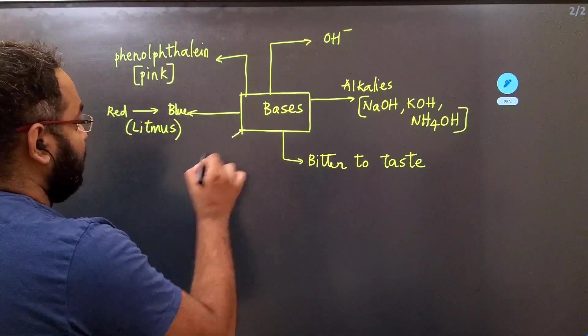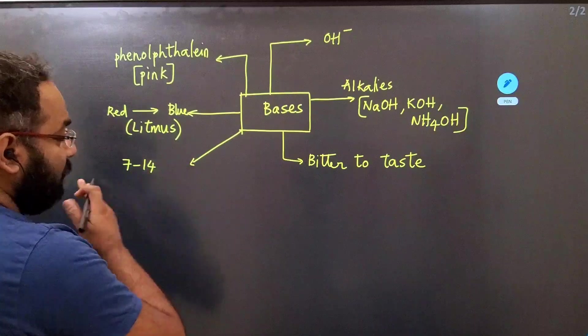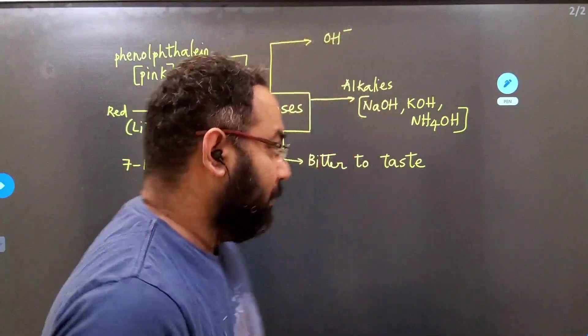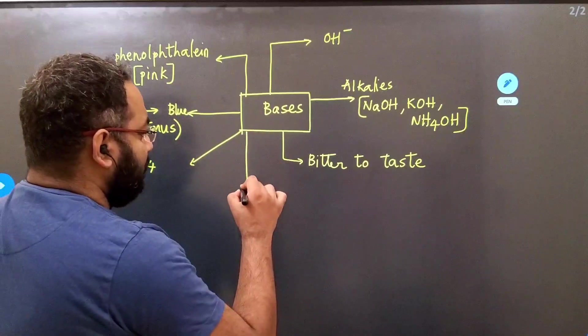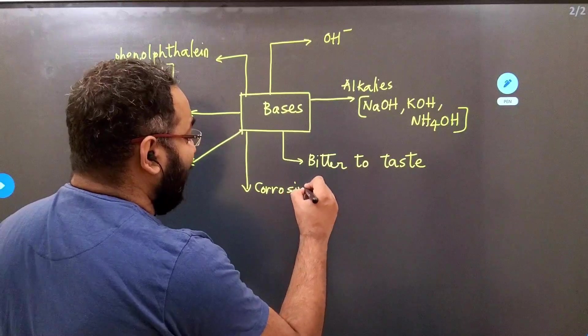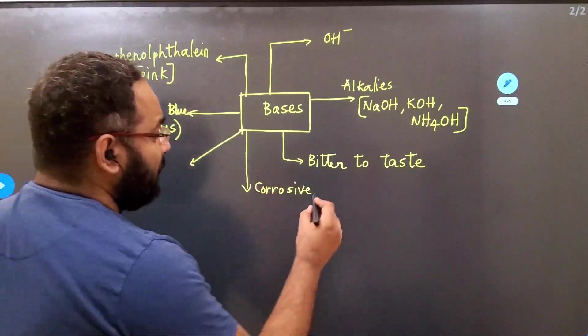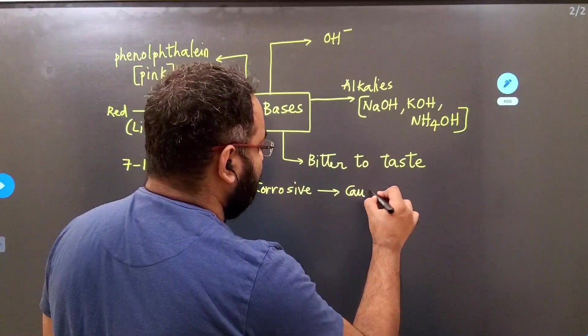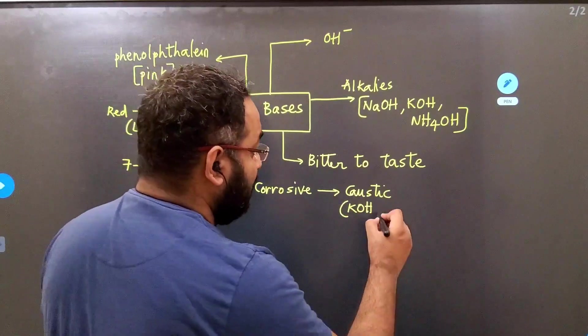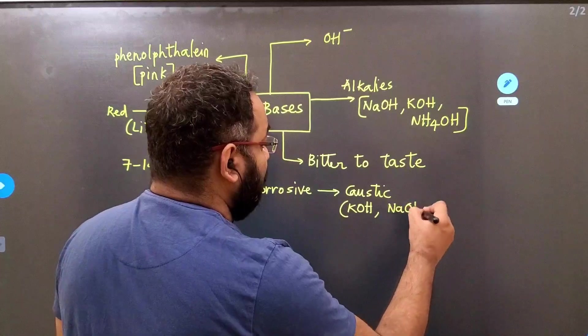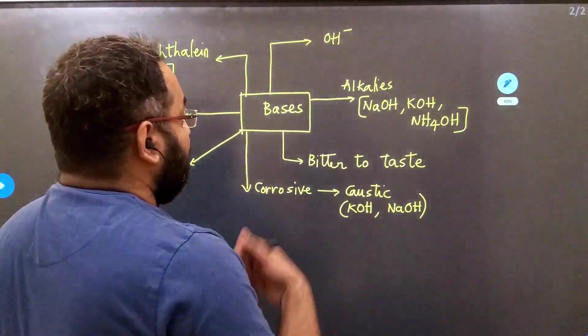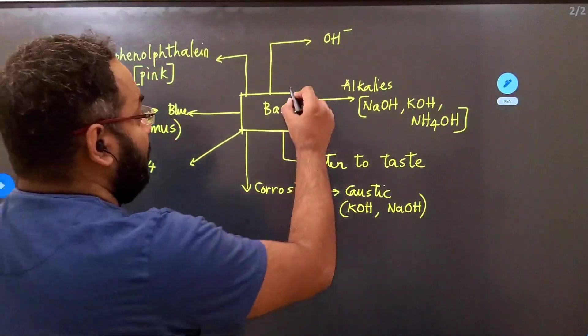Let us also look at the pH range. The pH range for bases is from 7 to 14. If it is closer to 14, it is a stronger base. If it is closer to 7, it is a mild base. Let us also look at some of the other properties that we need to know. There are a lot of bases that are corrosive. In fact, many acids are also corrosive. Corrosive bases are called caustic bases. The best example would be KOH, which is sometimes also called as caustic potash. Sodium hydroxide is also called as caustic soda. Caustic means something that is corrosive.